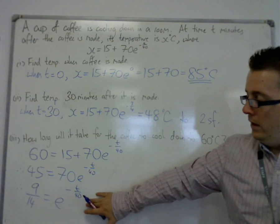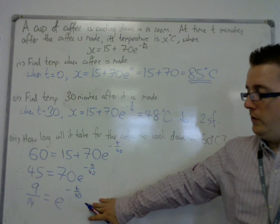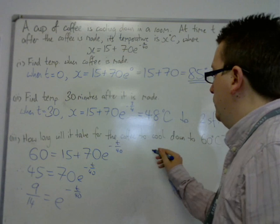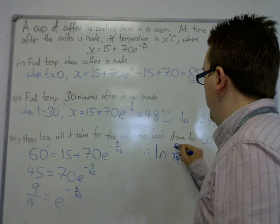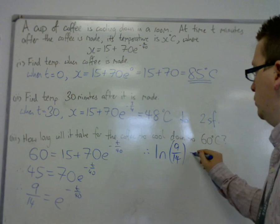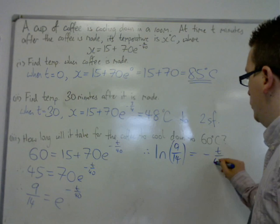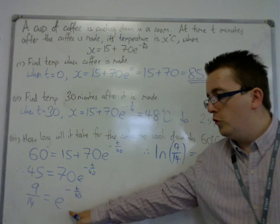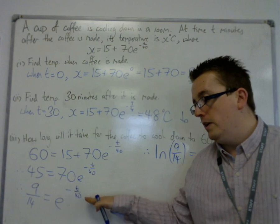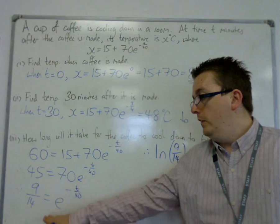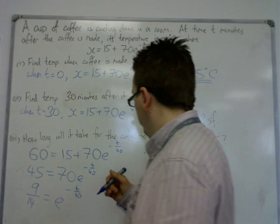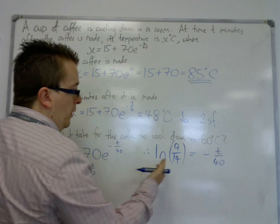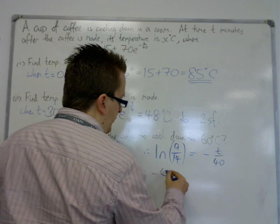From here, I'm going to log both sides. What that's going to do is we're going to get log of 9 fourteenths equals minus t over 40, because log of e to the minus t over 40 is just minus t over 40. The log and the e cancel each other out as they are inverse functions. I can multiply both sides by minus 40.